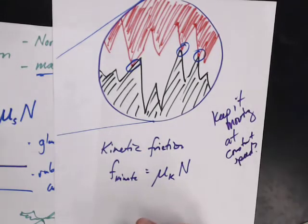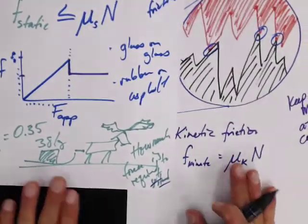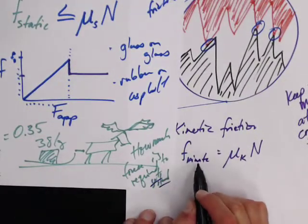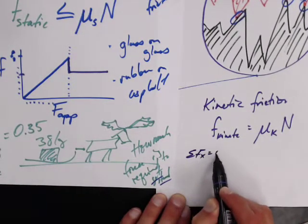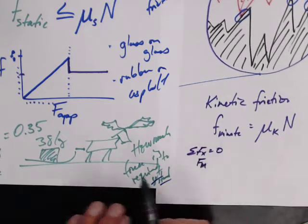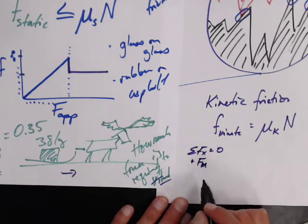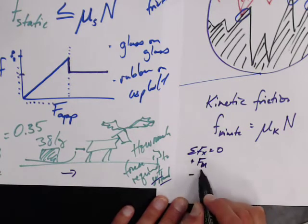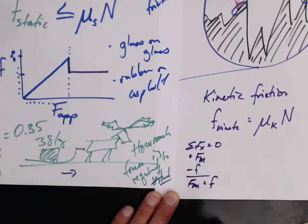So how hard does my moose have to pull now? Well, the sum of the forces in the x-direction have to equal zero. So the force of the moose is in the positive direction, and the force of friction is in the negative direction. These equal zero. So the force of the moose is going to equal the force of friction.